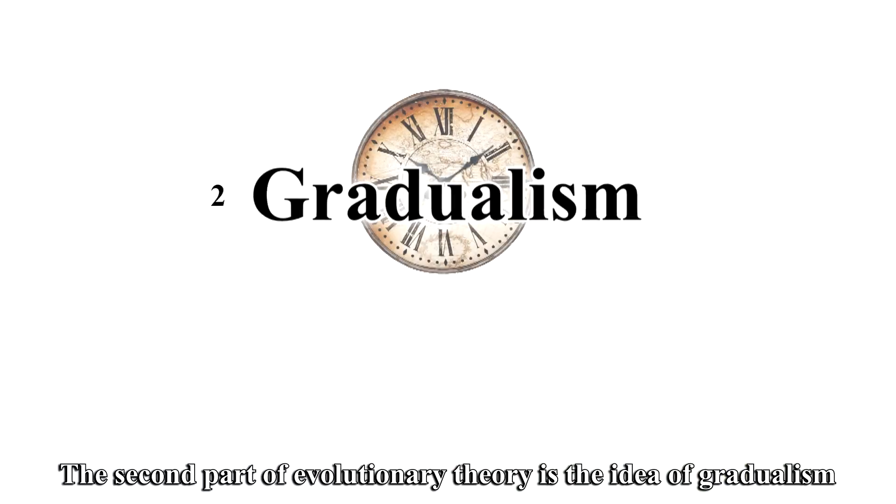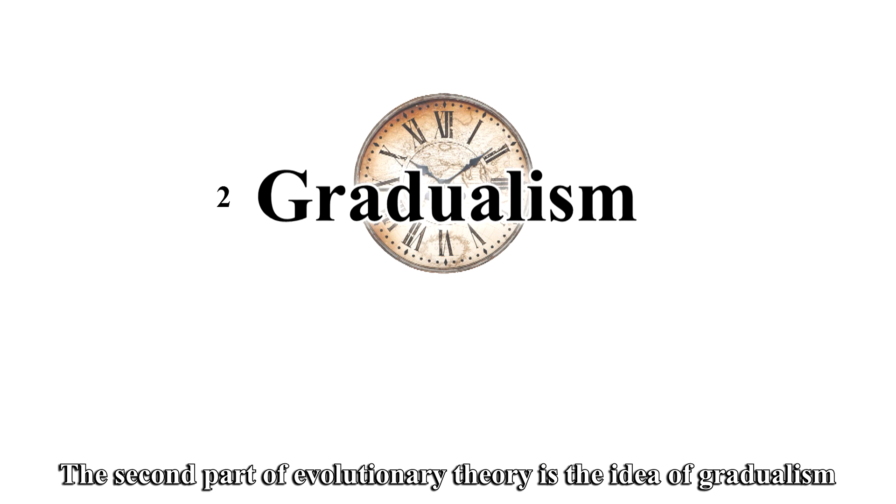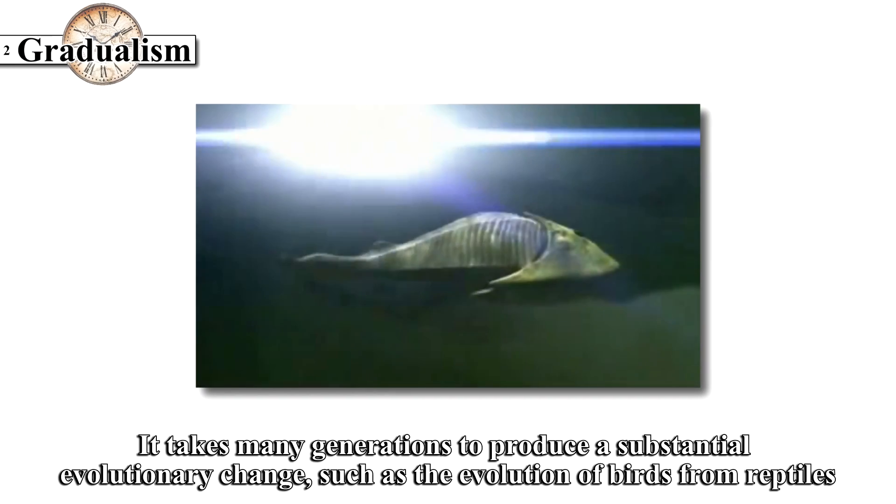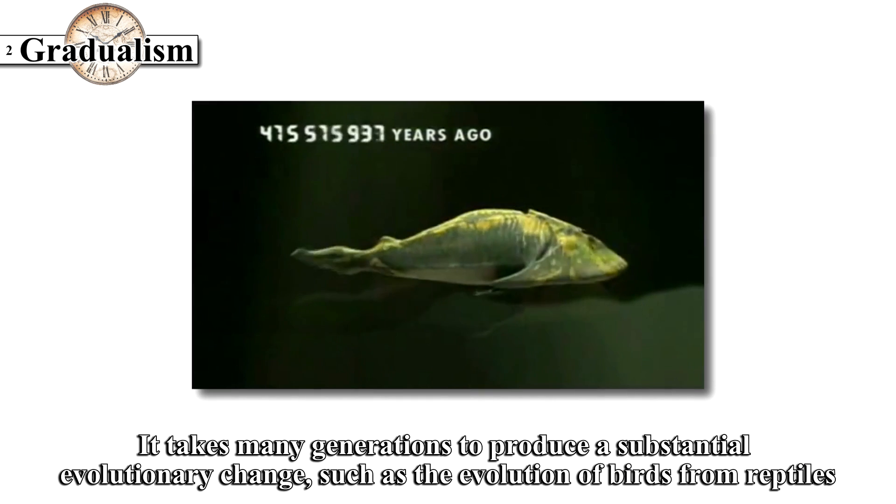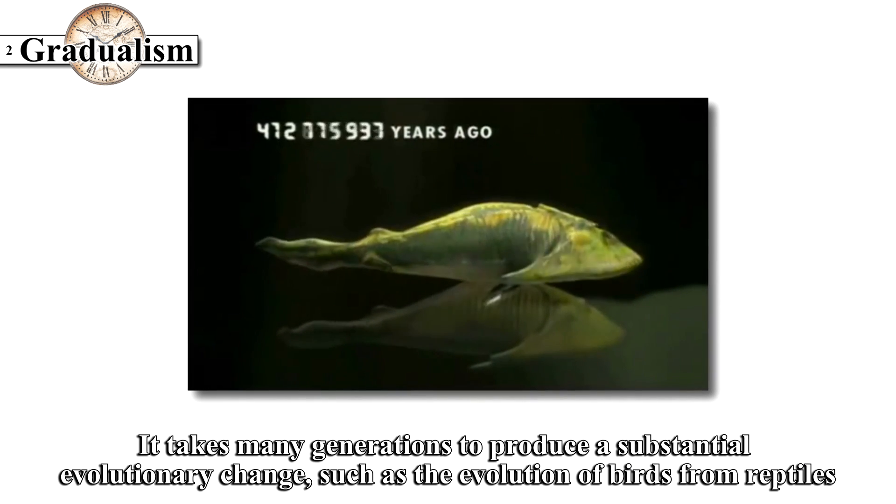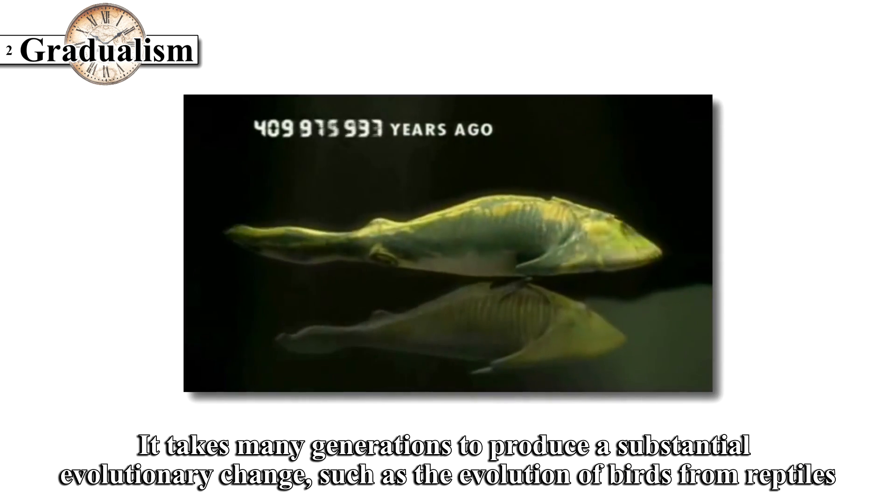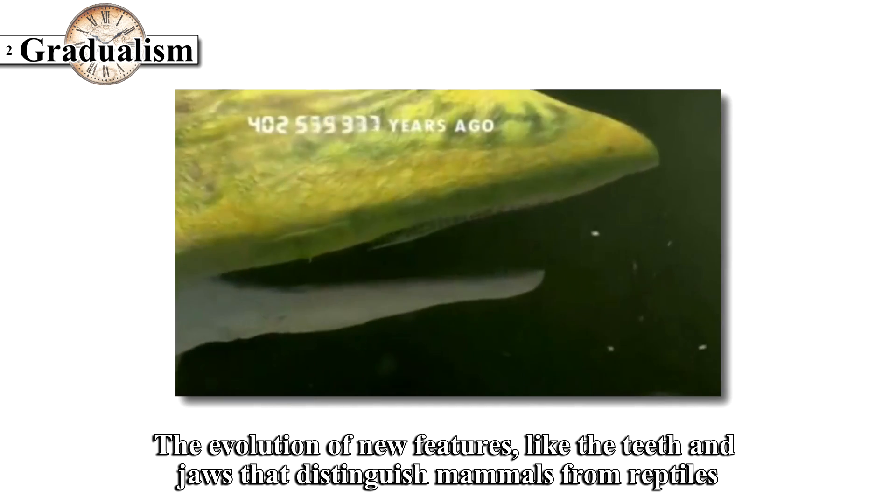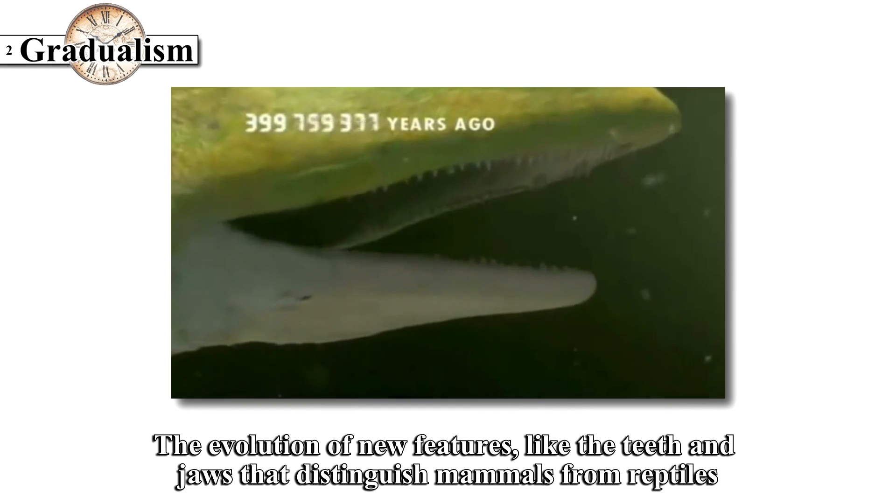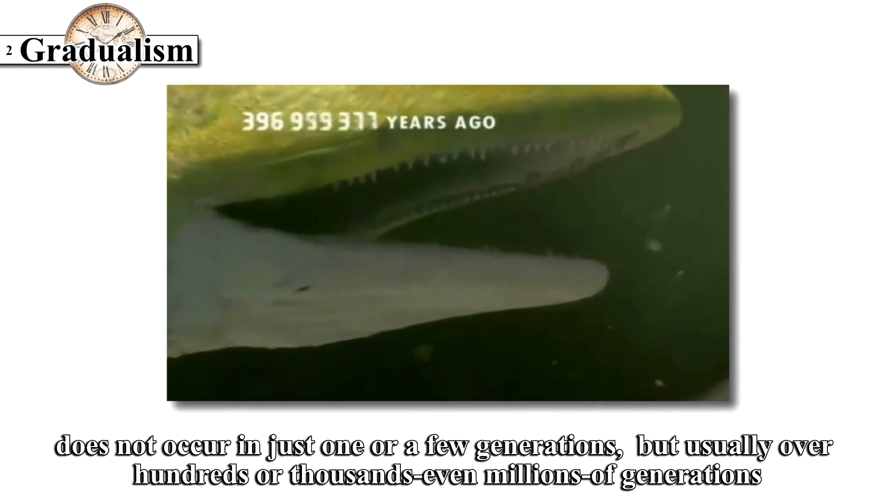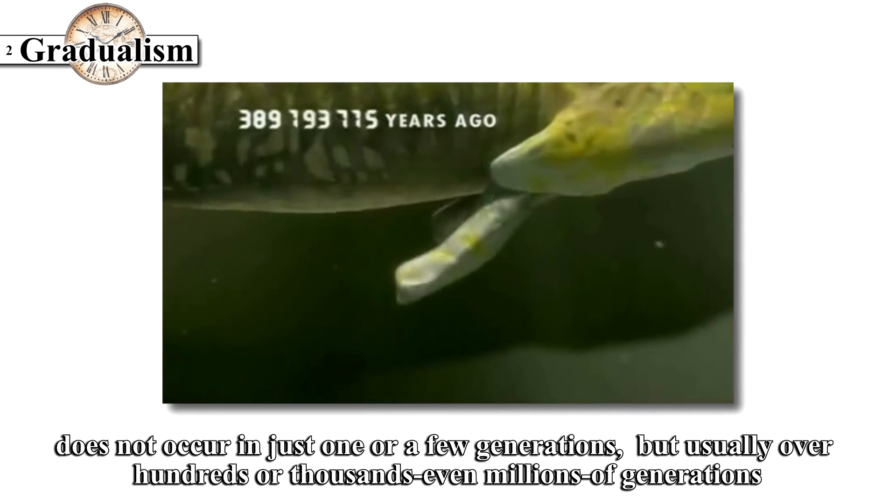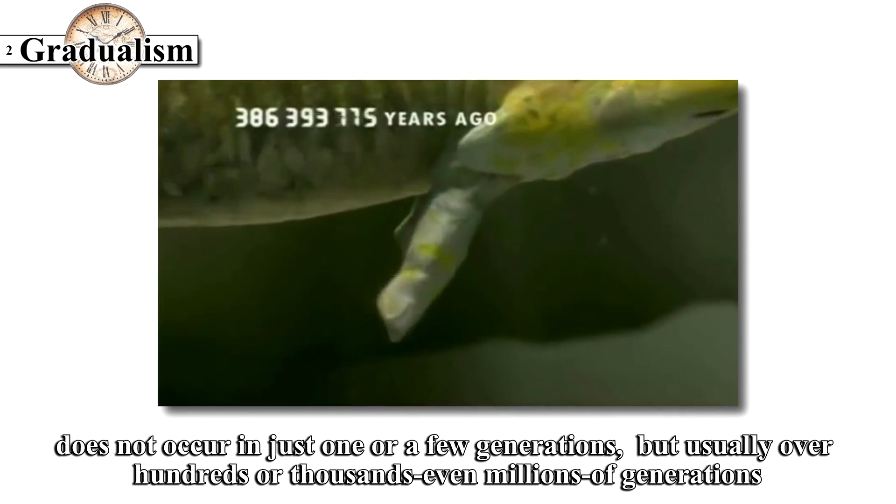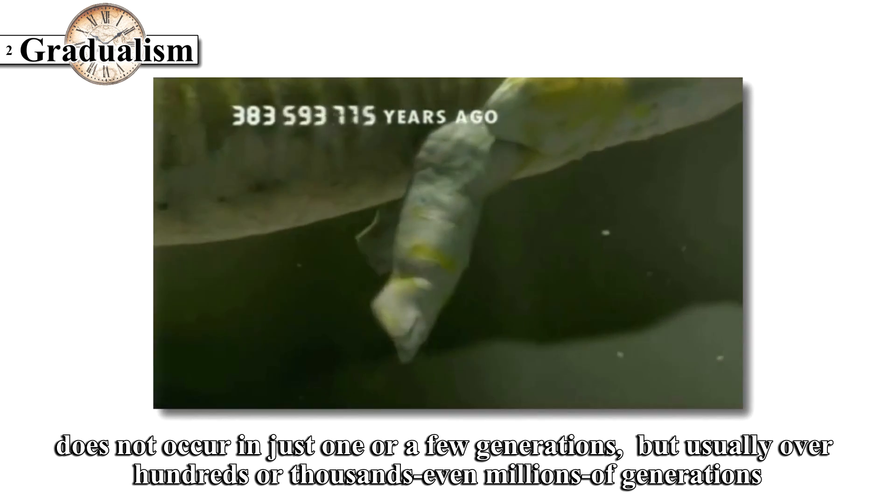The second part of evolutionary theory is the idea of gradualism. It takes many generations to produce a substantial evolutionary change, such as the evolution of birds from reptiles. The evolution of new features, like the teeth and jaws that distinguish mammals from reptiles, does not occur in just one or a few generations, but usually over hundreds or thousands, even millions of generations.